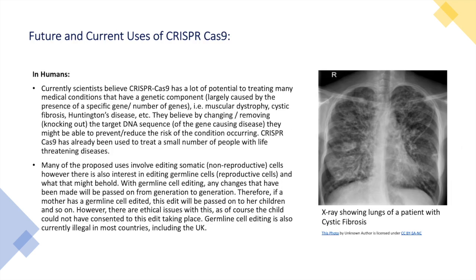So, what are the future and current uses of CRISPR-Cas9? Starting with humans: scientists believe that CRISPR-Cas9 has a lot of potential to treat many medical conditions that have a genetic component — conditions which are largely caused by a specific gene, a specific gene mutation, or a number of genes.